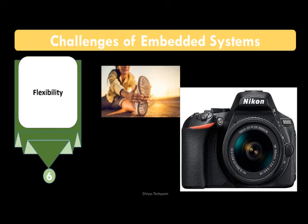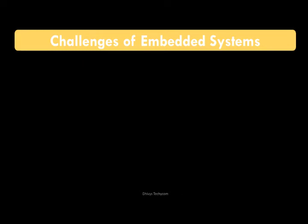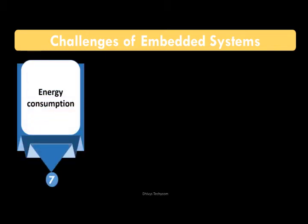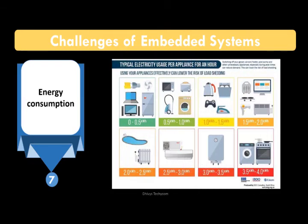The seventh important challenge is energy consumption, which must be kept very low. The lower the energy consumption, the more competitive the product is on the market. For example, with mobile phones, energy consumption for a full battery charge is a key consideration. Low energy consumption is a very important factor in embedded system design.